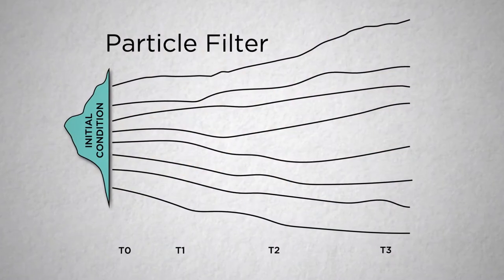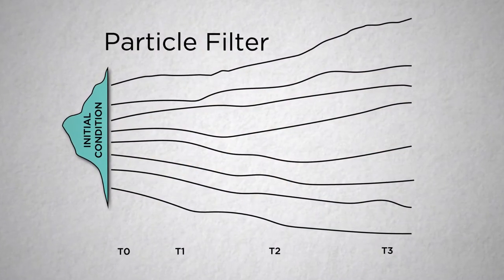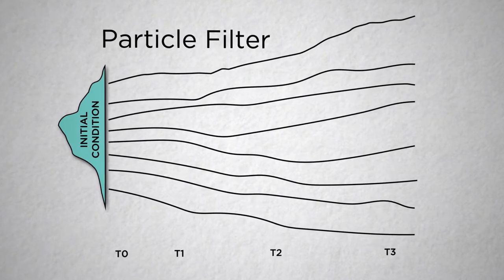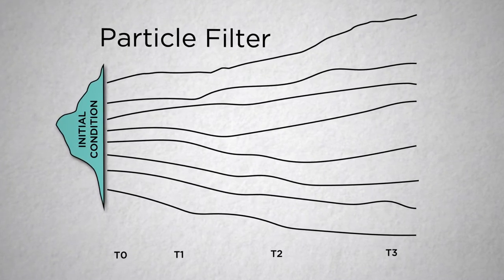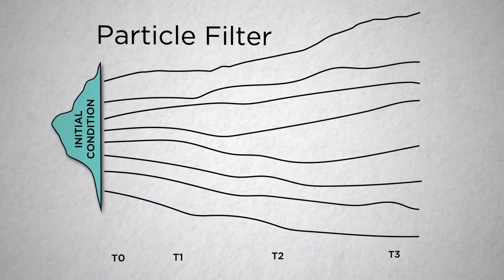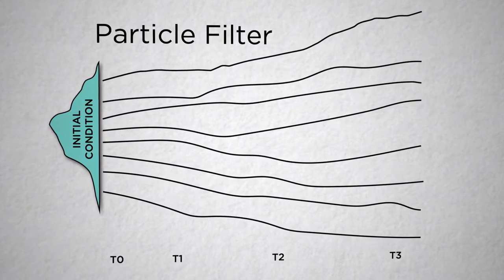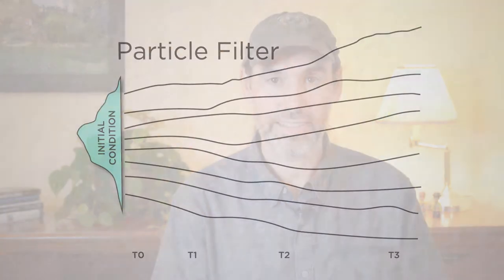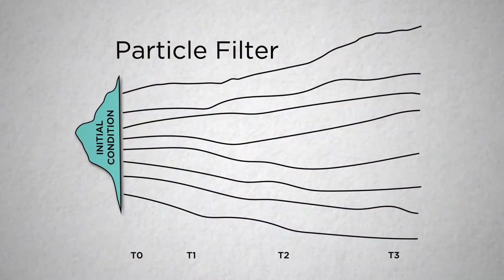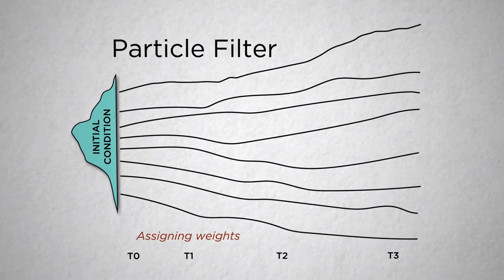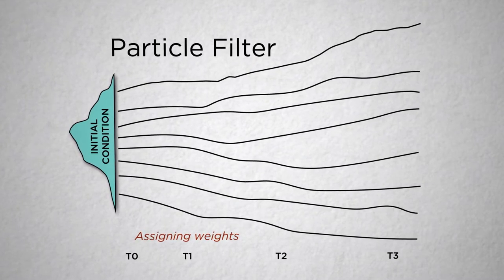Our forecast in this case is just a set of ensemble predictions, which we'll call particles — each ensemble member is a particle. So the key problem is: how do we update that particle? The first key insight into the particle filter is how we do that, and the idea is we do it by assigning weights to those particles.